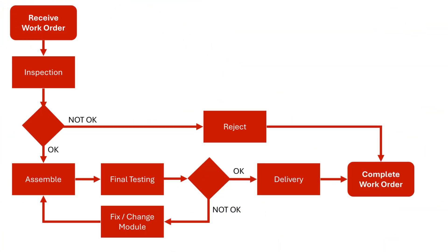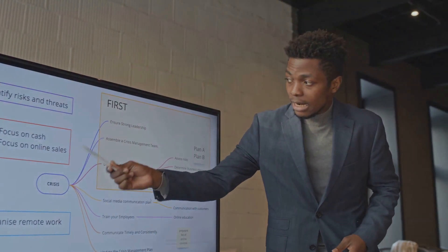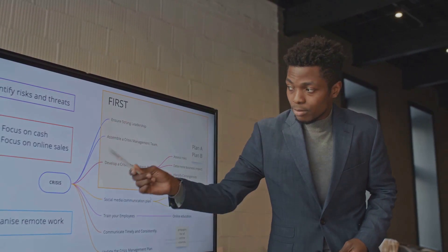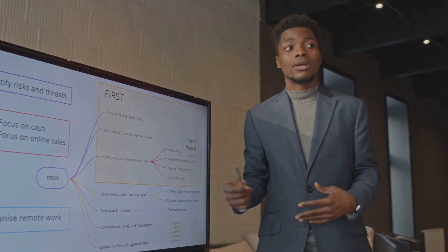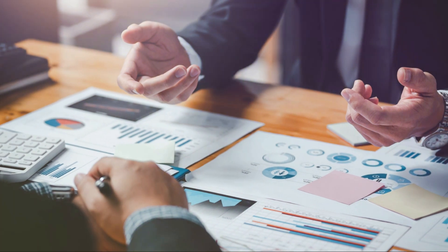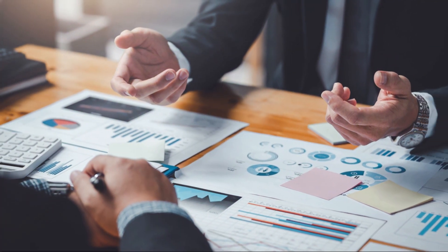Let's apply this to our toaster production line. We'll map out every step from receiving a work order to completing it. Begin by gathering your team and brainstorming each task in the process. Use sticky notes or a whiteboard to arrange them into a logical sequence. Once you've visualized the process, it's easier to pinpoint inefficiencies and set measurable goals, like reducing defects by 25%. With this foundation, we're ready to move on to data collection.